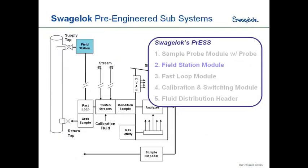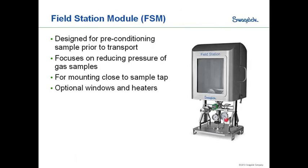The second PRESS unit is the field station module — perhaps one of the simplest in the set. Here's a picture of one: there's a large case that raises up, with an interlocking device that locks it in the raised position so you can work on it and then close it afterwards.